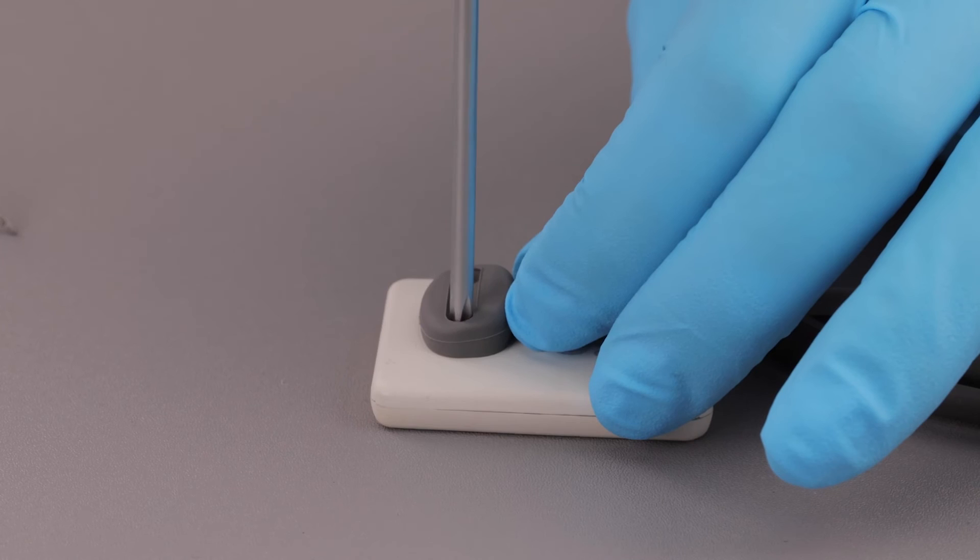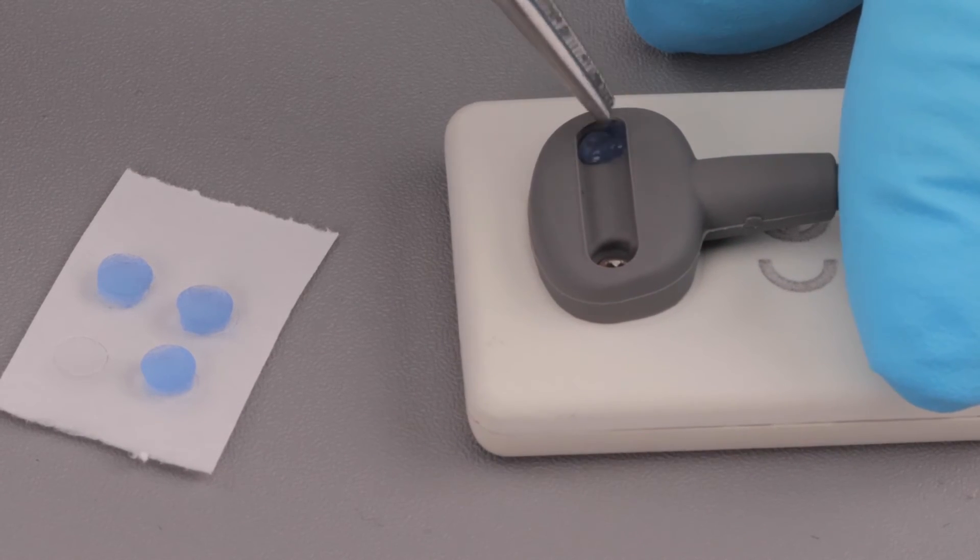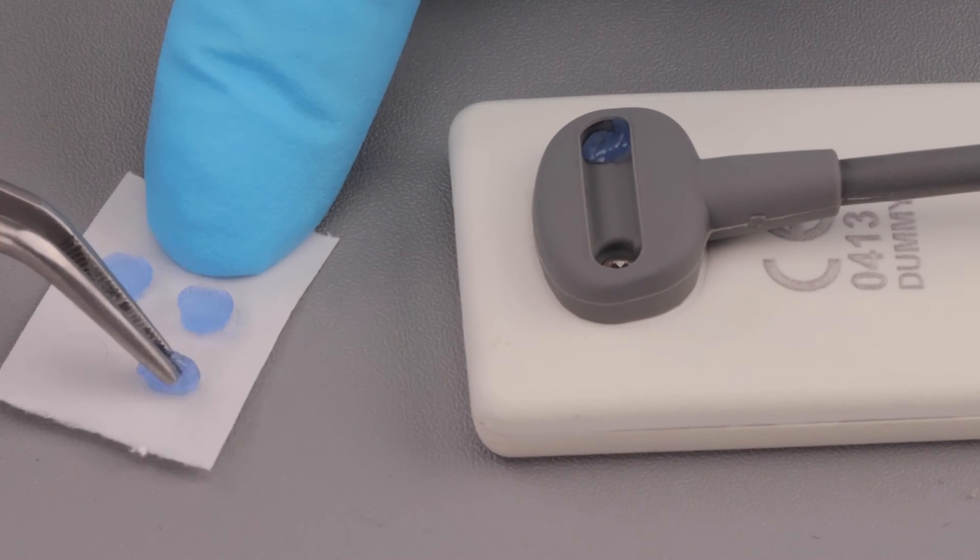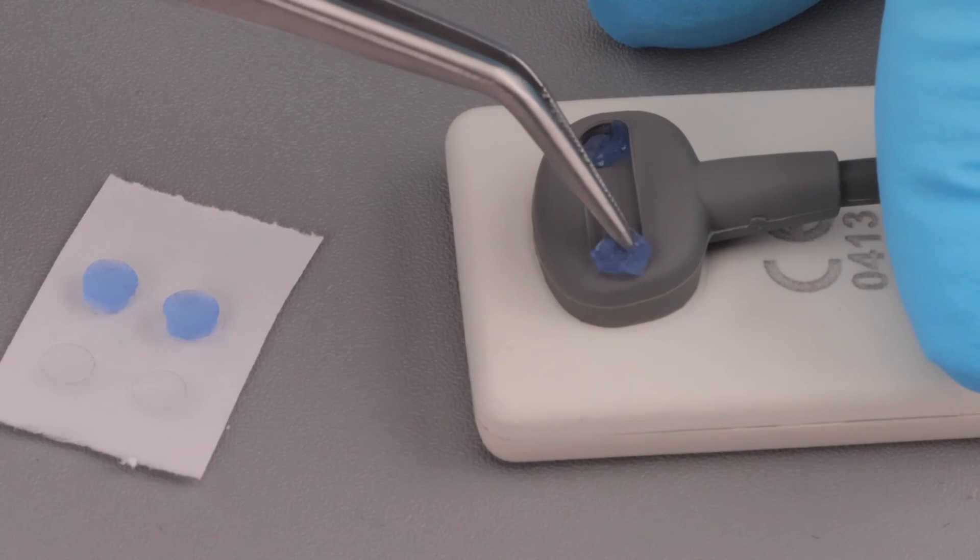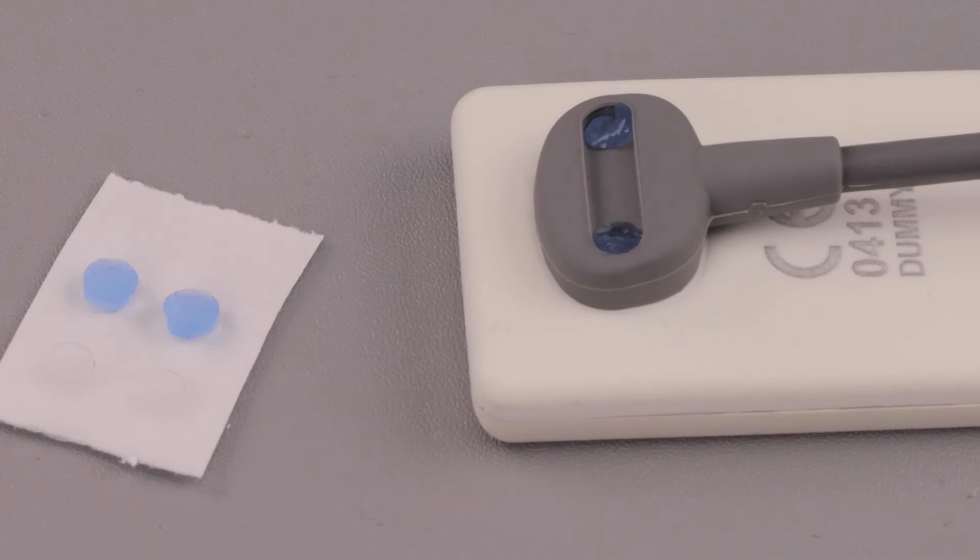Using tweezers, remove a gel disc from its paper backing and place it over one of the screws you just tightened. Make sure that the gel material completely covers the screw. Remove another gel disc and repeat this action for the second screw.